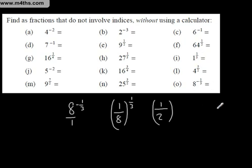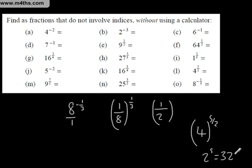4 to the 5 over 2. Let's think about this one. We take the square root of 4, which is 2. 2 to the 5th is 32. Therefore, 4 to the 5 over 2 power is 32. 64 to the 1 half is the square root of 64, which is 8. 5 to the negative 2 is 1 over 5 squared, which is 1 over 25.